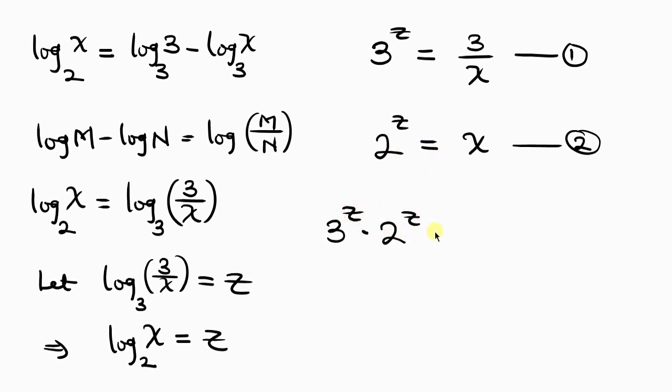This is equal to 3 over x times x. Now notice that x can cancel out leaving behind 3. And then from the property of indices so long as the exponents are the same we can multiply the bases.